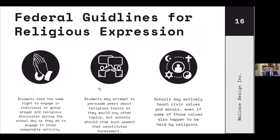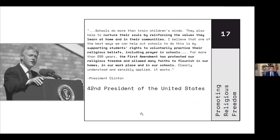Federal guidelines for religious expression state that students have the right to engage in individual or group prayer and religious discussion during school as they do to engage in other comparable activities. Students may attempt to persuade peers about religious topics, but schools should stop speech that constitutes harassment. Schools may actively teach civic values and morals, even if some of those values also happen to be religious values. President Clinton said: 'Schools do more than train children's minds — they also help nurture their souls by reinforcing the values they learn at home and in their communities.' For more than 200 years, the First Amendment has protected our religious freedom and allowed many faiths to flourish in our homes, our workplaces, and our schools. Clearly understood and sensibly applied, it works.